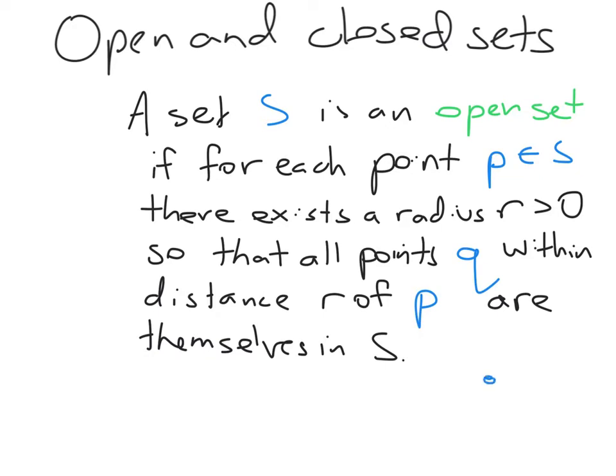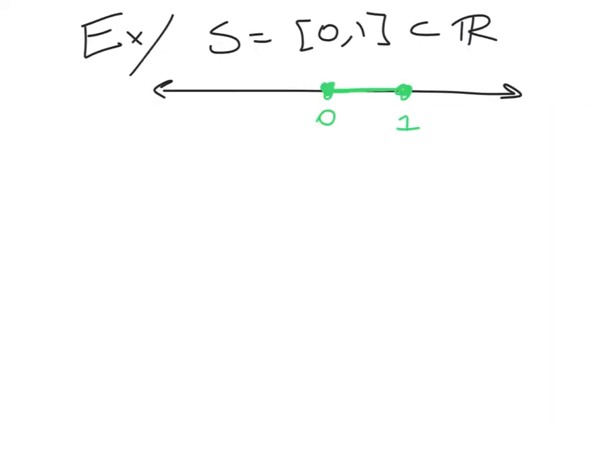So what we're trying to say is if we have a point P, and it's living in our set S, we can draw a little ball around it, and if we choose a small enough ball, we're going to be able to draw a ball so that the entire ball, which we'll call a neighborhood, the entire neighborhood of P lives within the set.